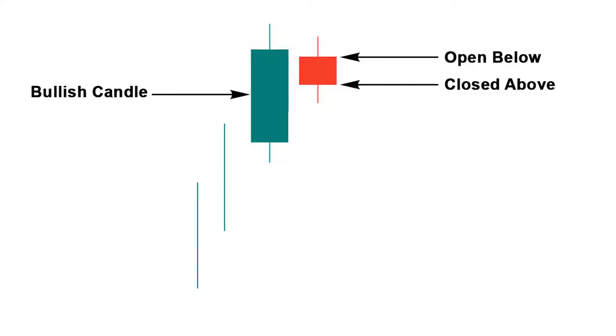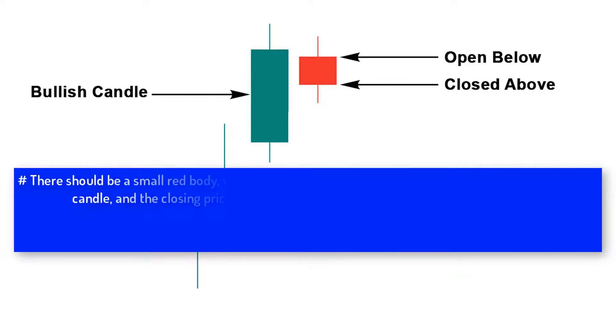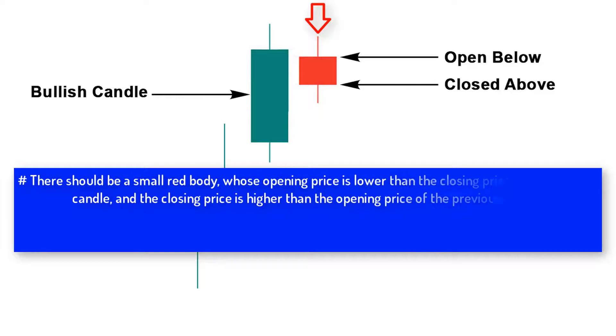Number one: There should be a small red body whose opening price is lower than the closing price of the previous candle, and the closing price is higher than the opening price of the previous candle.